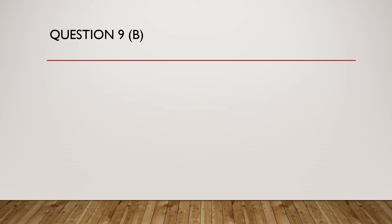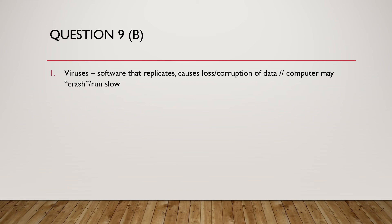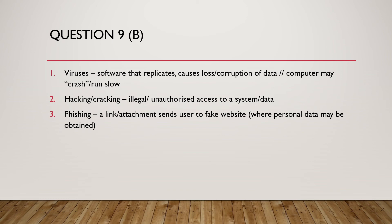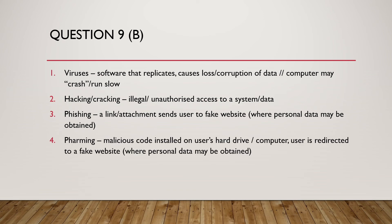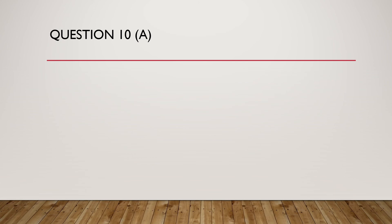Question 9B: Name and describe two other potential security threats when using the internet. Examples include: virus — software that replicates and causes corruption; hacking — unauthorised access to a data system; phishing — a fake link sent to a user redirecting to a fake website; pharming — malicious code installed on a user's hard drive redirecting to a fake website; spyware — relays keystrokes to a third party.